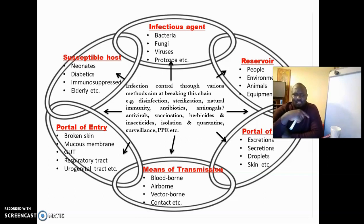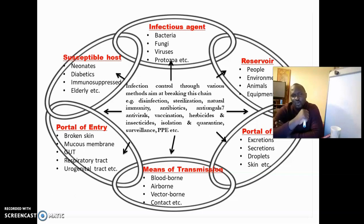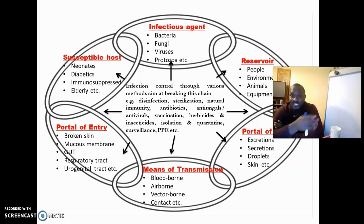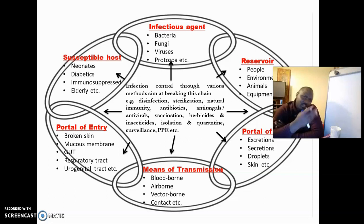If the pathogen is airborne, it must enter through a certain route in the susceptible host. Are you going to inhale the pathogen — will it enter through the respiratory system? Are you going to ingest it through the gastrointestinal tract? Through mucous membranes, for example if you receive a wound or injury — would the organism causing tetanus enter through that route? Or is it going to enter through the urogenital tract, as in the case of STIs and STDs?